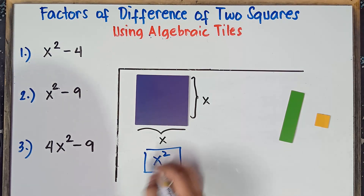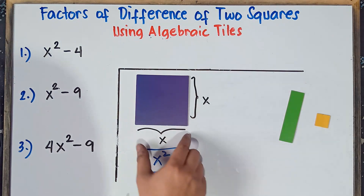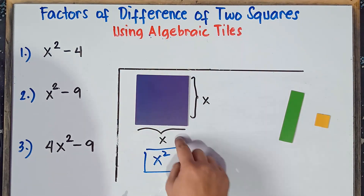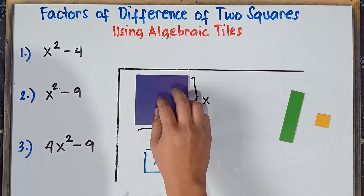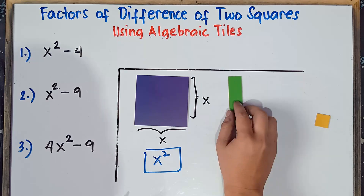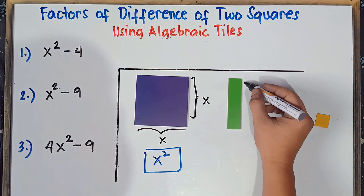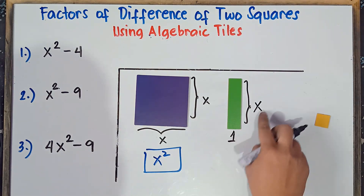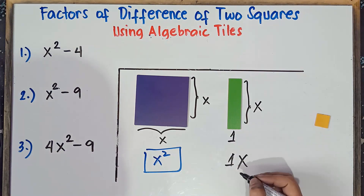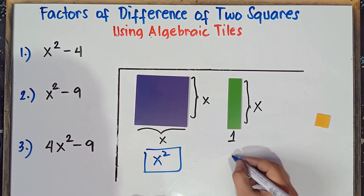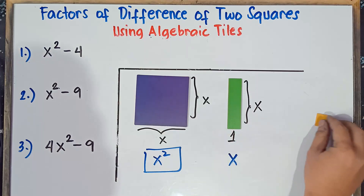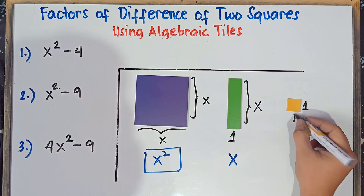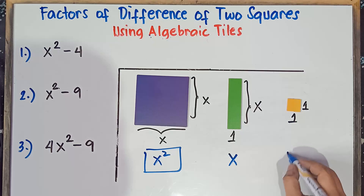So that's why we call this x squared — the length is x, the width is x. Now, why do we call this one x? Because the length is x and the width is 1. If you multiply x times 1, that would be 1x, or the same as x. And this will be positive 1 — the length is 1, the width is 1, so 1 times 1 would be positive 1.